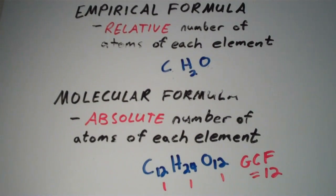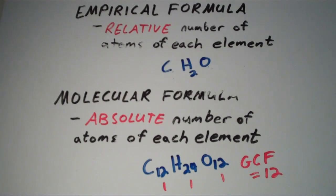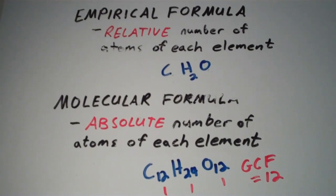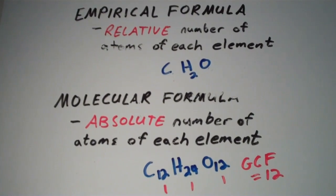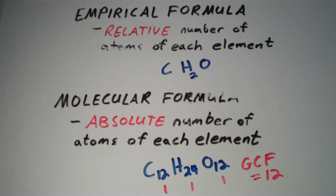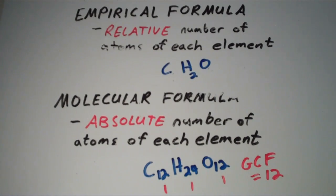You can always go from the molecular formula to the empirical formula — anytime you're given a molecular formula, you can always find the empirical formula. However, it's not necessarily true in reverse. Given an empirical formula like CH2O, you need more information to find the molecular formula; the empirical formula alone is not enough. That's the lesson on empirical and molecular formulas.